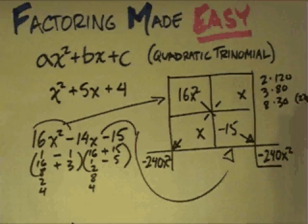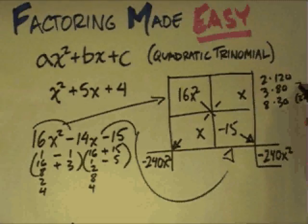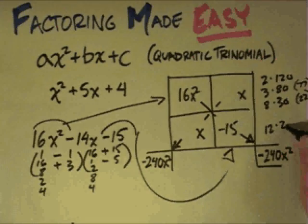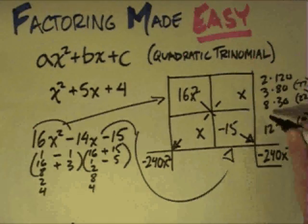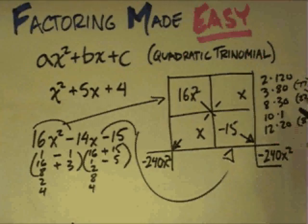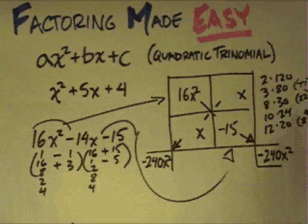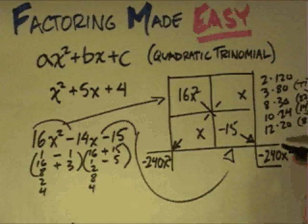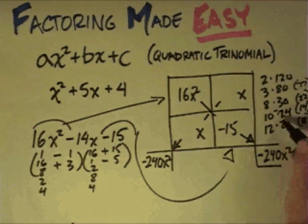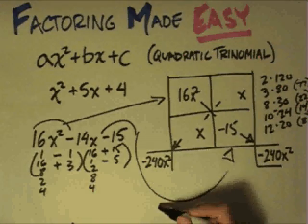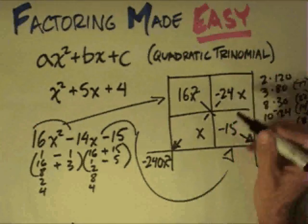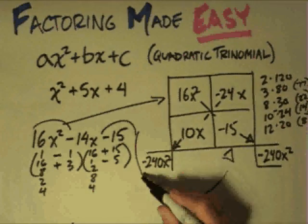If I try 12 and 20, the difference is only 8. So the one that works is 10 and 24: 10 times 24 gives 240, and the difference is the 14 I want. Since the sign is negative, it goes with the larger of the two numbers so they add up to negative 14 and multiply to make negative 240. So I write negative 24 and positive 10 — I can write these in either place and it will work.